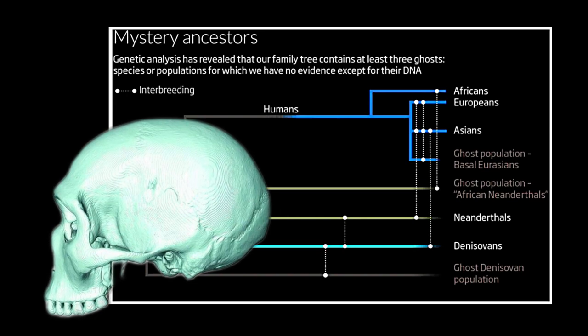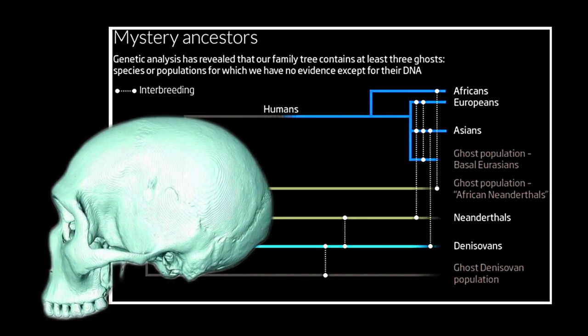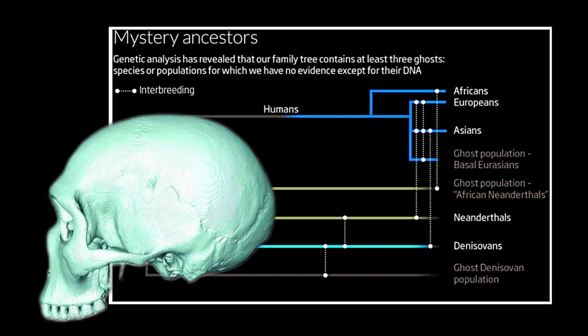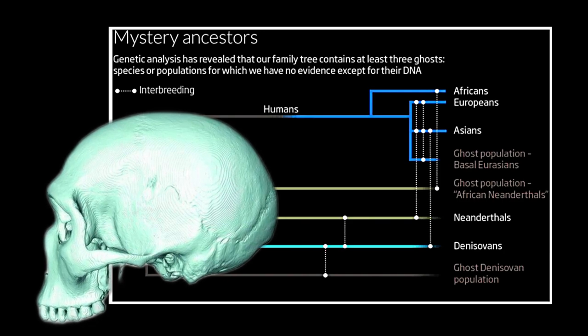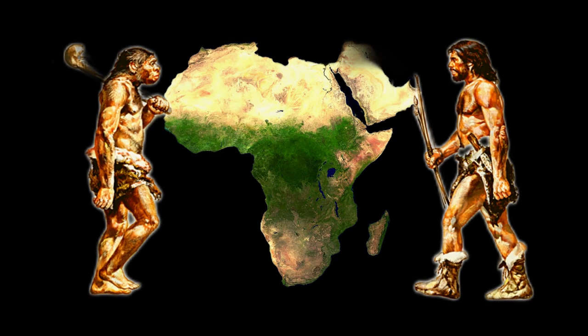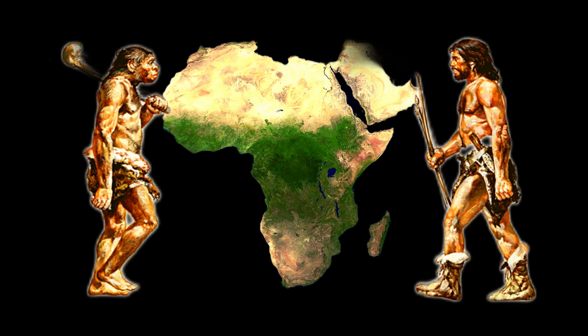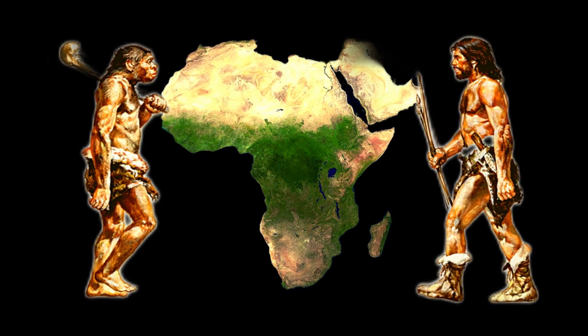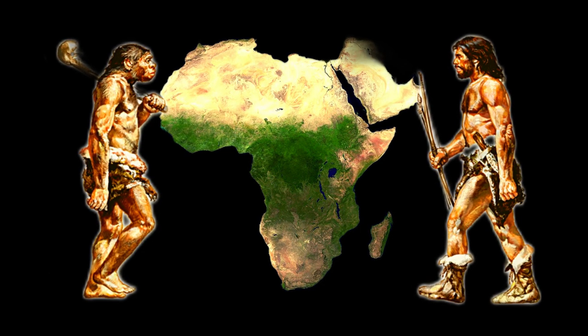Researchers have now used digital morphometrics and statistical algorithms on cranial fossils from both species' evolutionary histories to rebuild in 3D the skull of Homo sapiens and Neanderthals' last common ancestor for the first time.